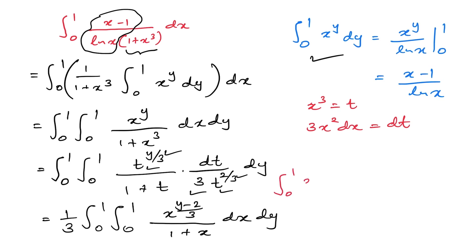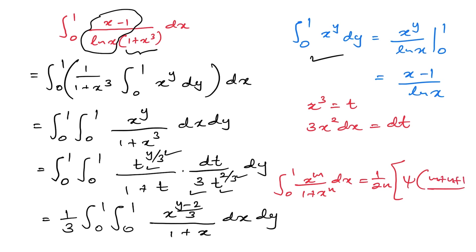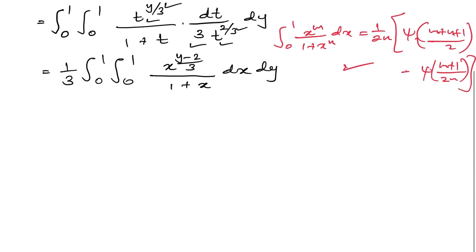We now use the known result for the integral from 0 to 1 of x to the m over (1 plus x to the n) dx — I solved this in a previous video and will add the link in the description. The result is (1/(2n)) times [digamma of (m plus n plus 1)/(2n) minus digamma of (m plus 1)/(2n)].